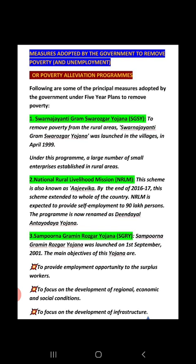So, what were these policies? Number one was Swarn Jayanti Gram Swarozgar Yojana. Gram means village, Swarozgar means self-employment, and Yojana means policy. So this Rural Self-Employment Policy was launched in April 1999, and under this program, a large number of small enterprises were established in rural areas to remove poverty.